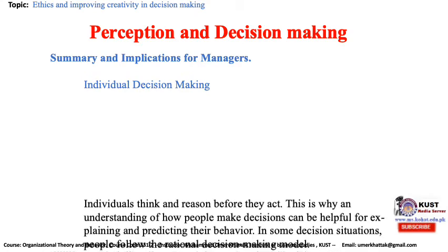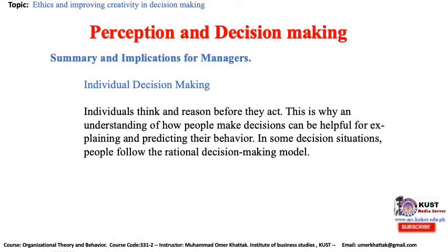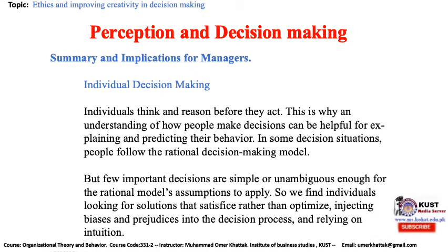Regarding individual decision-making: individuals think and reason before they act, which is why understanding how people make decisions can be helpful for explaining and predicting their behavior. In some decisions, people follow the rational decision-making model. But few important decisions are simple or unambiguous enough for the rational model's assumptions to apply, so we find individuals looking for solutions that satisfy rather than optimize, injecting biases and prejudices into the decision process, and relying on intuition.